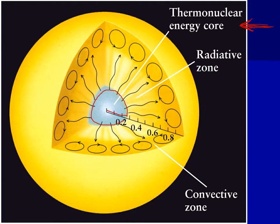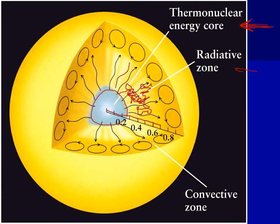Above the core, stretching from that point outwards to about two-thirds of the way out, is the radiative zone. Unlike what many diagrams show, the energy isn't radiating straight out — it's really bouncing around. It takes thousands, tens of thousands of years for the energy to make it up to the top of the radiative zone, bouncing around all over the place.